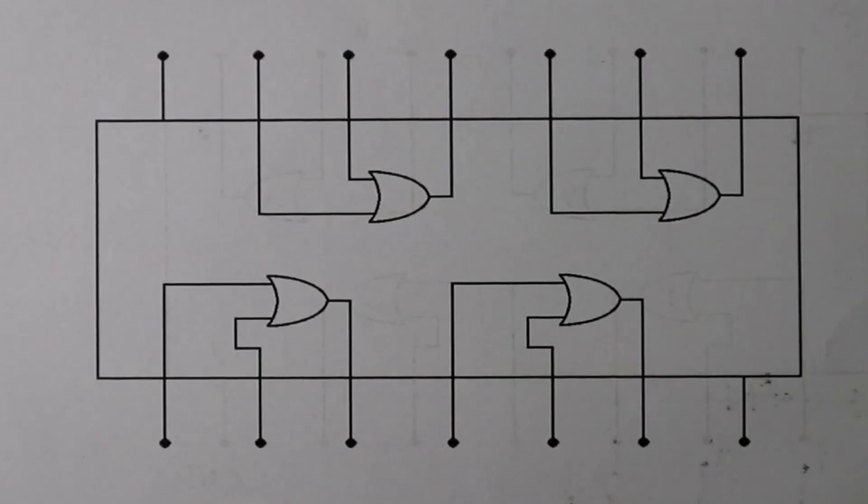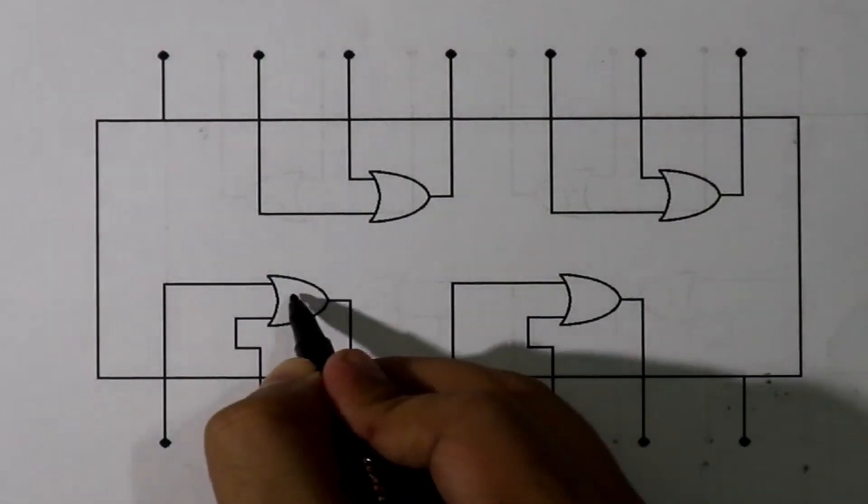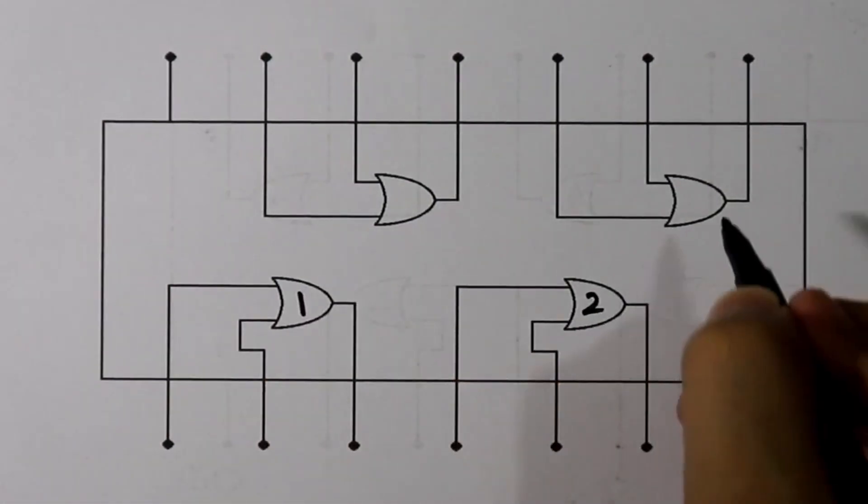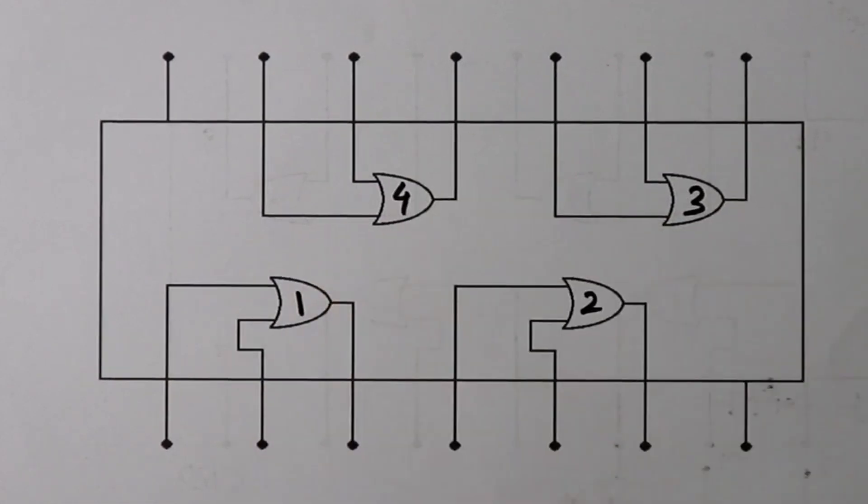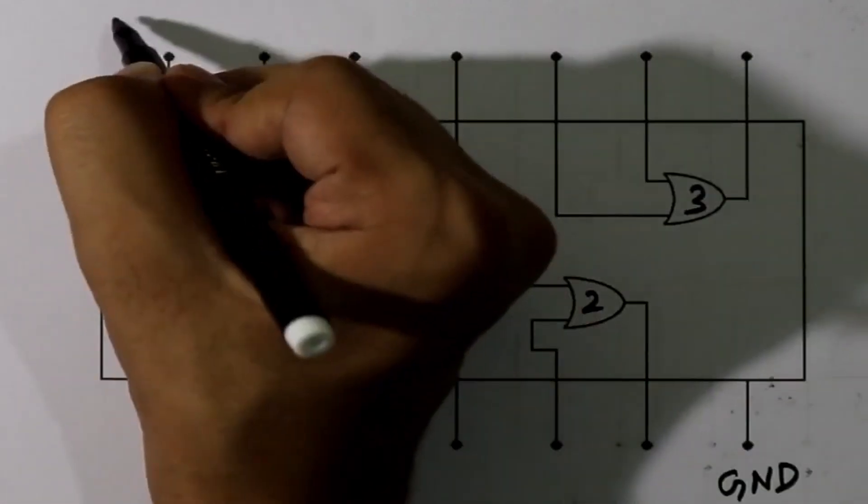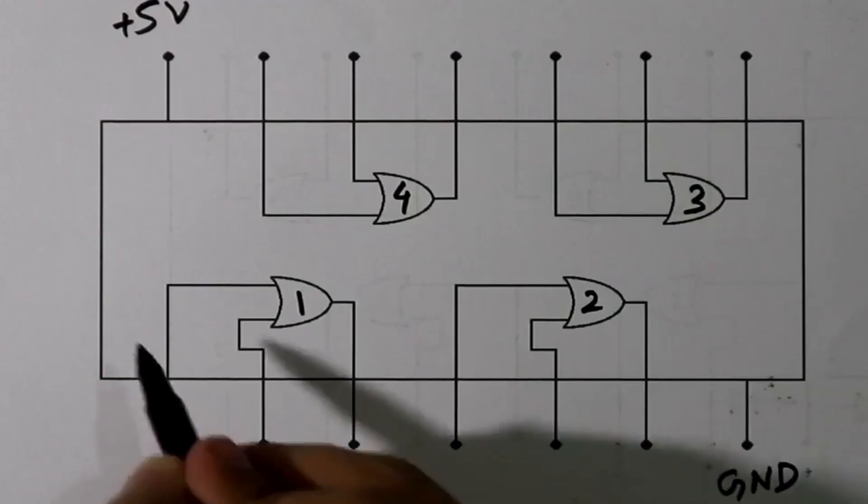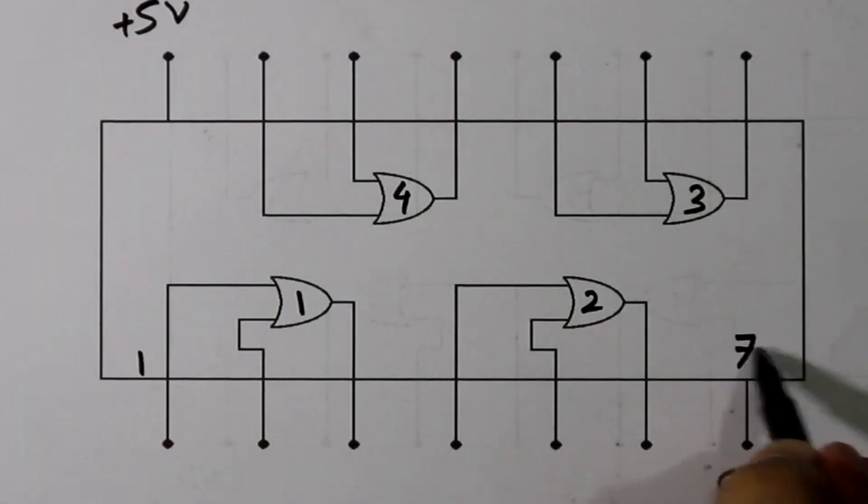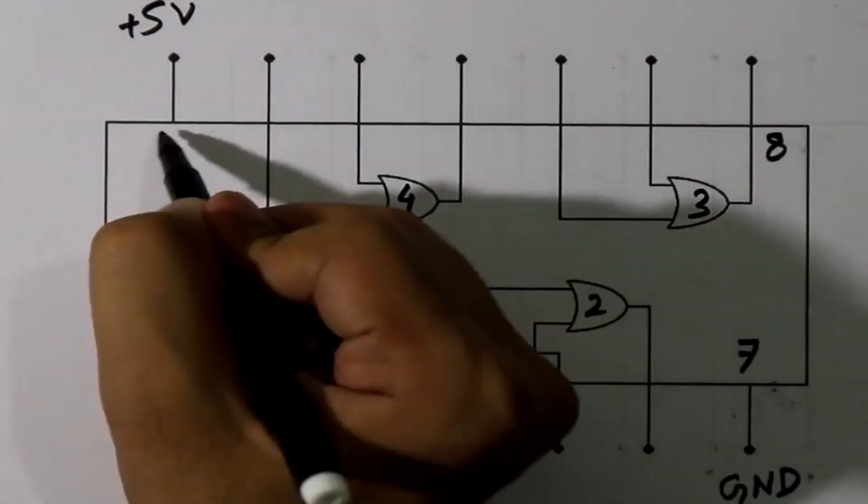This is the pin diagram of IC 7432. In this IC having 4 OR gates: OR gate 1, OR gate 2, OR gate 3 and OR gate 4. This should be connected to the ground, this should be connected to the 5V. It is pin number 1 to 7 here and 8 to 14.